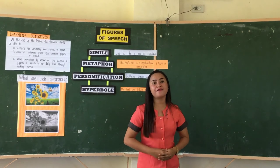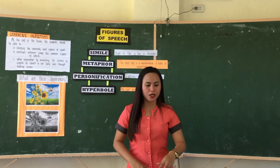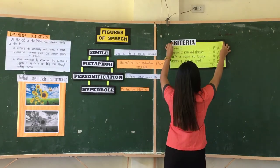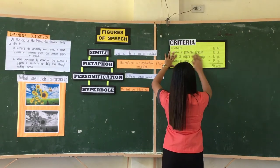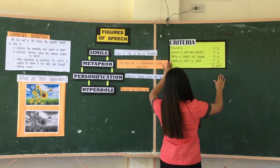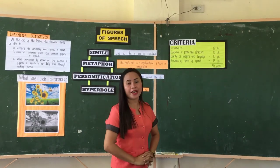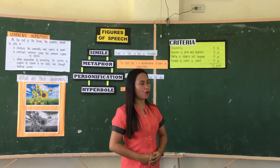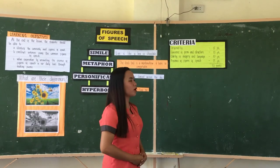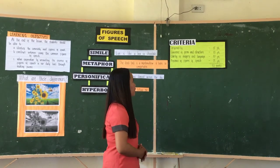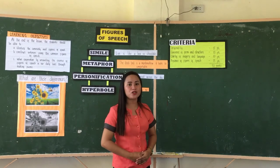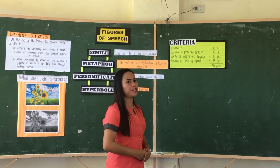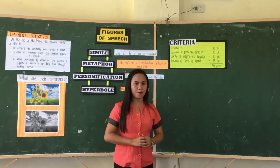Your poem must have figures of speech. I have here the criteria for making your own poem: originality — 15 points; coherence of form and structure — 10 points; clarity of imagery and language — 10 points; and presence of figures of speech — 15 points, for a total of 50 points.